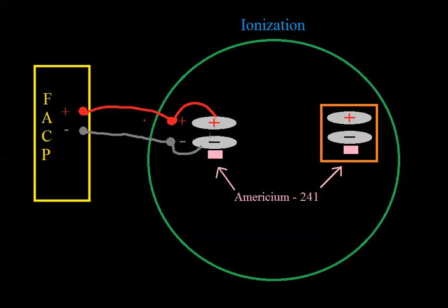We haven't really gotten into how current flows on the atomic level yet, but current flows through conductors and not insulators, and conductors have a free electron. An electron is a negatively charged particle, and what this americium does to the oxygen and nitrogen particles is it actually knocks an electron off of them.